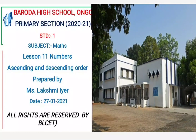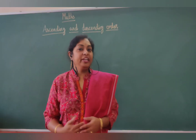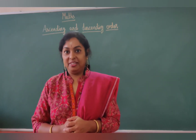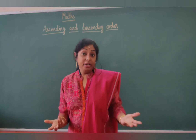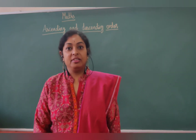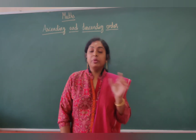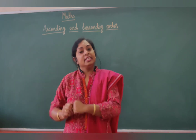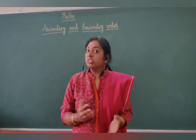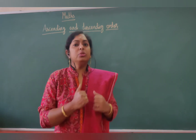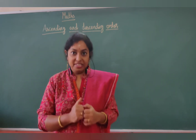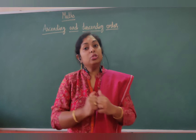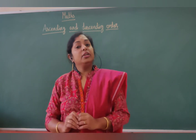Welcome to the online session. Today we are going to learn about arrangement of numbers in ascending and descending order. Ascending order means arrangement of numbers from the smallest number to the biggest number. Descending order is just opposite to ascending order — it means arrangement of numbers from the biggest number to the smallest number.